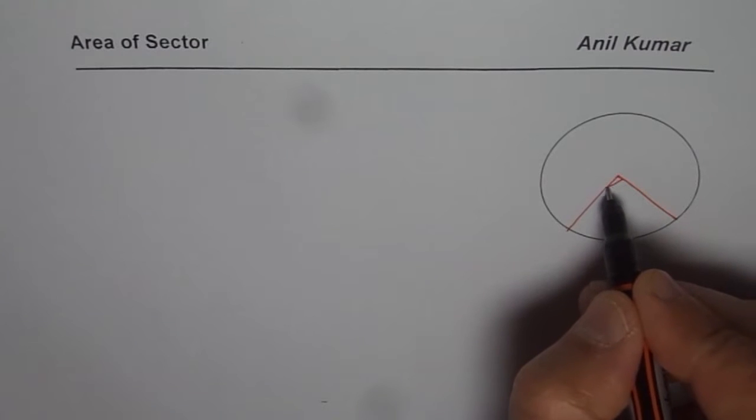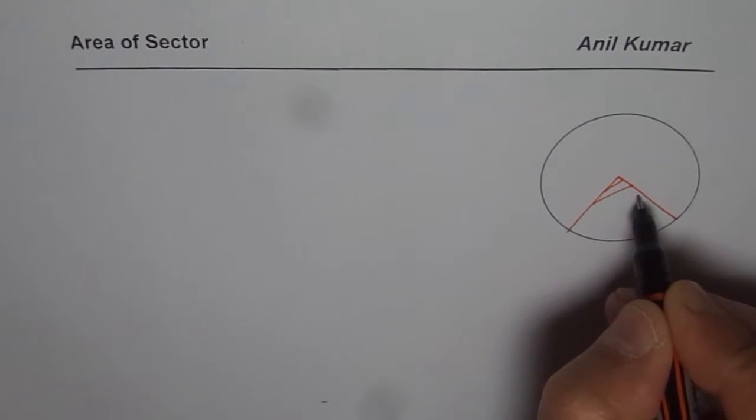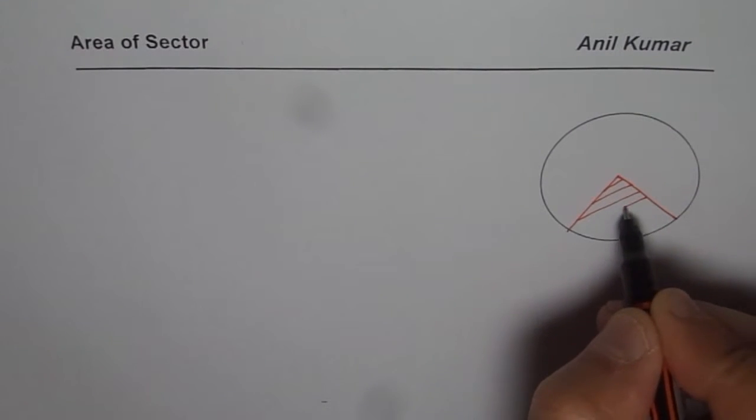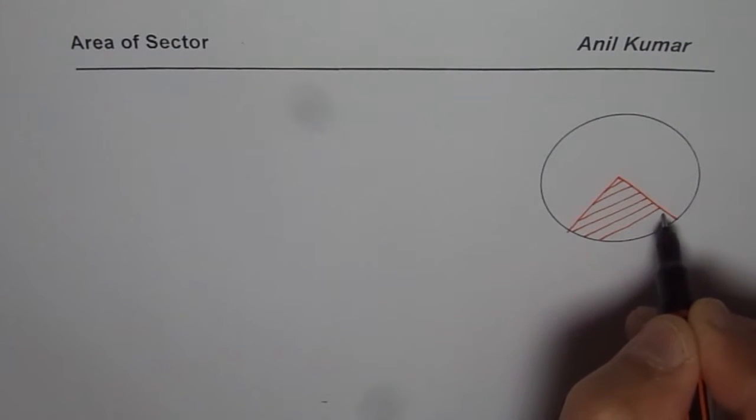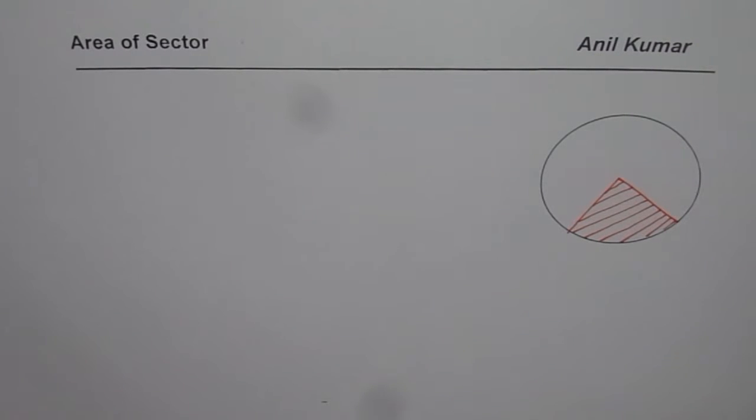We can form a sector by joining from the center two points on the circumference. The area which we get in between is called the area of the sector. This is a sector.